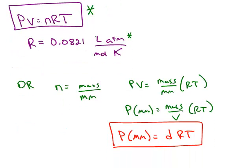A variation of PV equals nRT can be found by doing a little bit of algebra. Instead of just using n, the number of moles, we can substitute mass divided by molar mass, which is how you would calculate the moles in the lab. Here I substituted in that mass divided by molar mass, then brought the molar mass over to the left and the volume over to the right, because that gives me the density — mass divided by volume. This equation in red is really the same as the ideal gas equation; it looks a little different because we made a couple of substitutions, but any time PV equals nRT works, so will this version of the gas law.